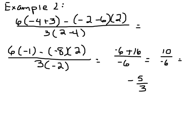We have 6, and then parentheses, negative 4 plus 3, minus parentheses, negative 2 minus 6, parentheses 2, over 3 times, parentheses 2 minus 4. So, this first parentheses here, negative 4 plus 3 is negative 1. Negative 2 minus 6 is negative 8. 2 minus 4 is negative 2. So, I've simplified that much.